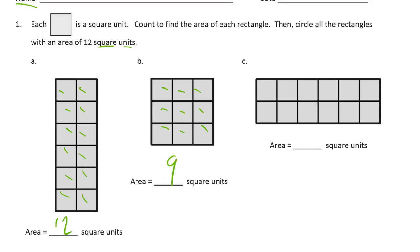1, 2, 3, 4, 5, 6, and then 2 sixes are 12, but we can just keep counting the rest of them. 12 square units. This one has 12 square units, and this one has 12 square units.